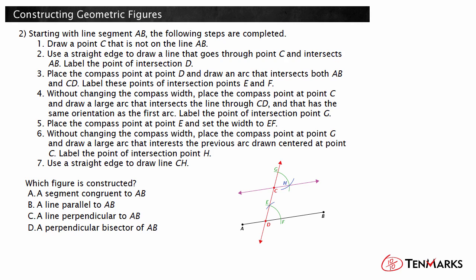The first two steps describe drawing a line CD intersecting AB as shown in red. Then, the next few steps shown in blue and green are used to copy an angle, as seen in the previous problem.